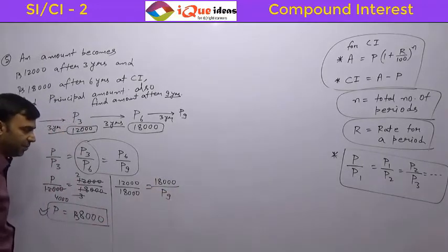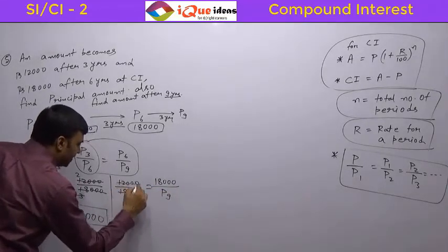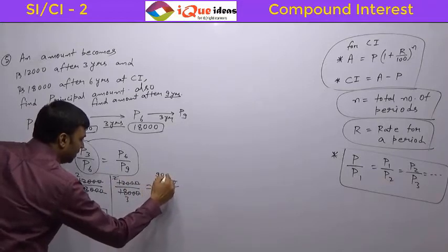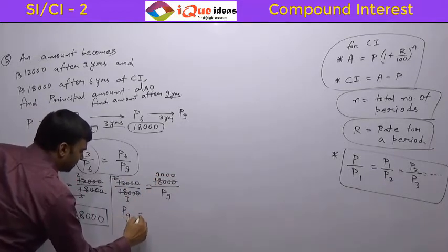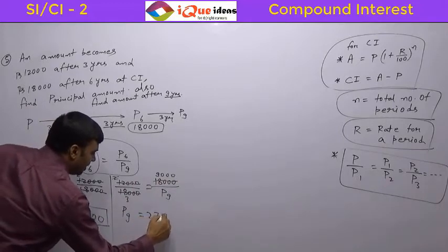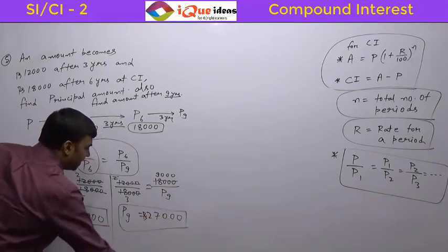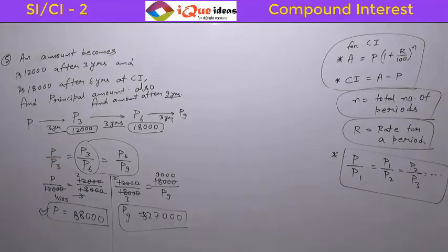We can calculate P9 from here. Simplifying: 6 3's are 18, 6 2's are 12, 2 cancels 18 to give 9,000. So by cross multiplication, P9 equals 3 into 9,000, that is Rs. 27,000. As long as the amounts are at the same gap, you can directly apply the ratio method.